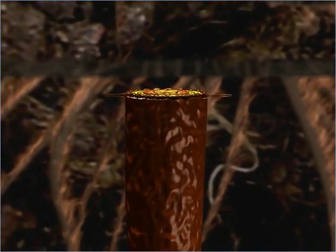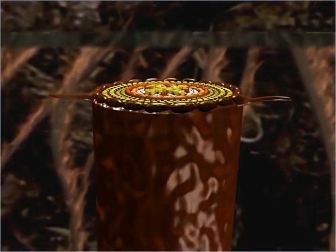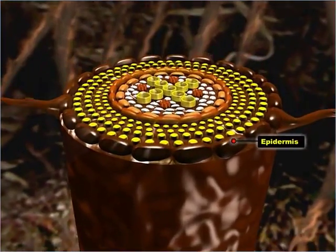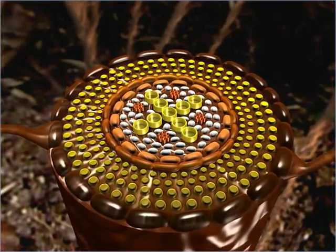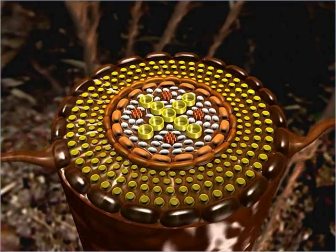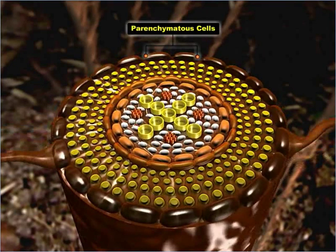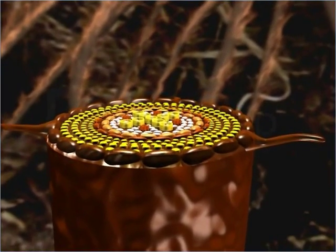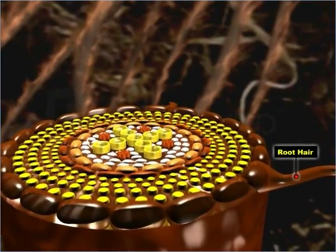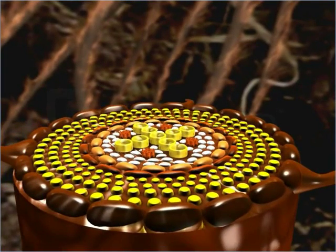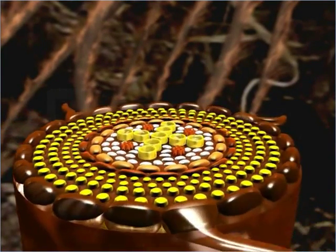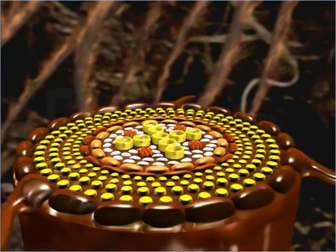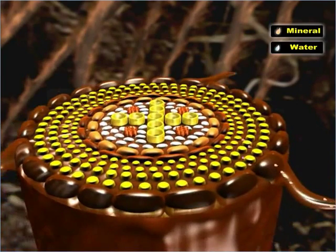Let's first learn about the outermost layer of the root: the epidermis. The epidermis acts as a protective covering for the root. It is composed of a single row of thin-walled parenchymated cells. The parenchymated cells give rise to unicellular hair-like structures known as root hairs. These hairs increase the absorption area of the roots and therefore facilitate the absorption of water and minerals from the soil.